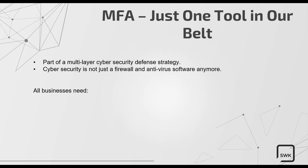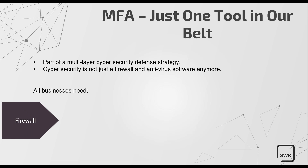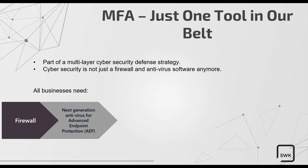All businesses need the following: a firewall to secure your network perimeter, and next-generation antivirus for advanced endpoint protection. Next-generation antivirus products are designed with artificial intelligence and machine learning capabilities that allow the software to learn your users' habits — where they log in from, the IP addresses they log in from. These tools are geared towards thwarting advanced attacks like ransomware. Basic antivirus software is no longer sufficient in a commercial environment.